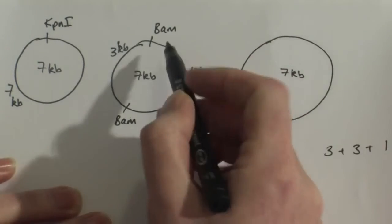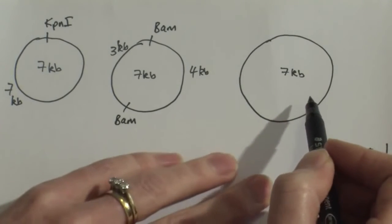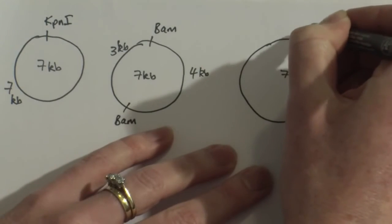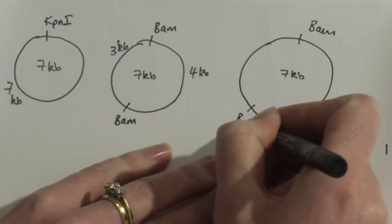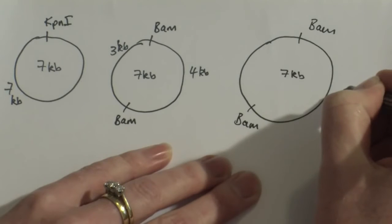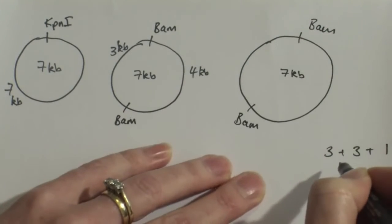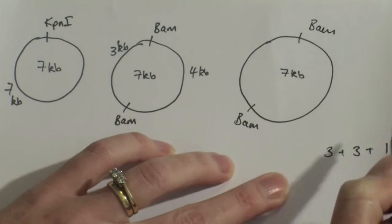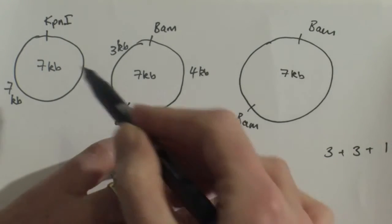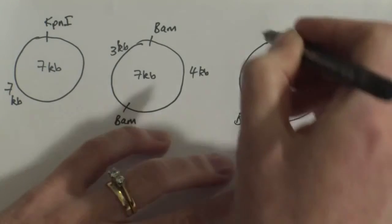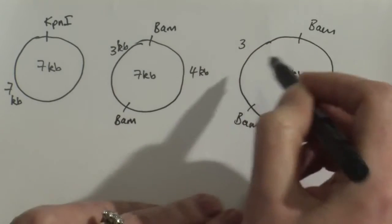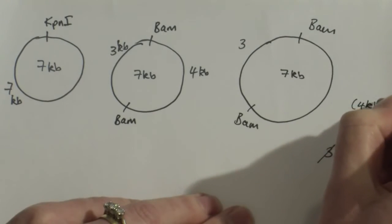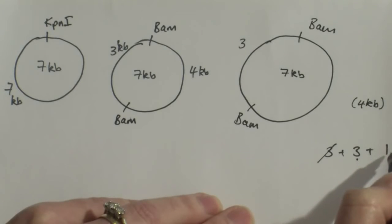So on this plasmid I want to see where BAM cuts and I want to see where KPN1 cut in relation to each other and how I will generate these bands here. So my BAM is going to cut here and here and that still gives me a 4kb band here and my 3kb band here. Now the bands I got from my double digest was a 3kb, a 3kb and a 1kb. So how can I imagine where the KPN1 cut to give me these bands? Well I've already got this 3kb here. This BAM to BAM was 3kb. So that's one of these taken care of.